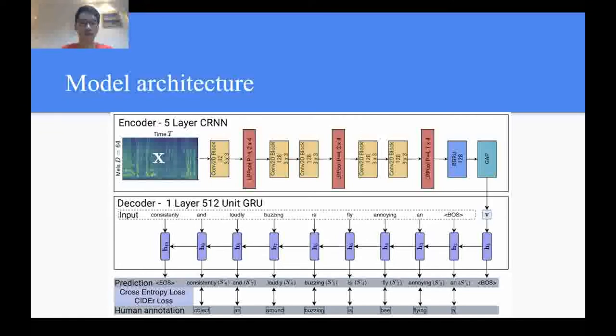This is our proposed CRNN-GRU model architecture. CRNN is a common architecture in sound event detection task. It consists of five convolution layers followed by a bidirectional GRU here. Convolution neural networks, or CNNs, are summarized into three blocks.